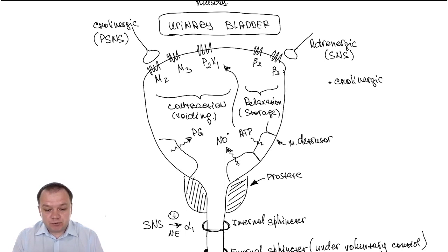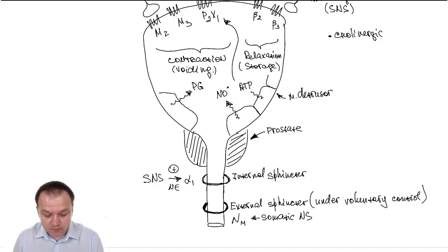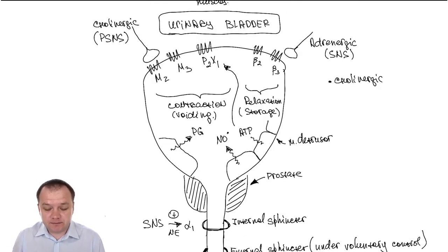Again, activation of M2 and M3 receptors causes contraction of the bladder, contraction of the musculoskeletal detrusor urine, and relaxation of sphincter, especially relaxation of internal sphincter, because external sphincter is under voluntary control. But relaxation of internal sphincter is important, so it's kind of antagonistic relations.